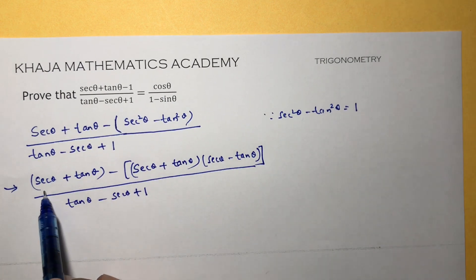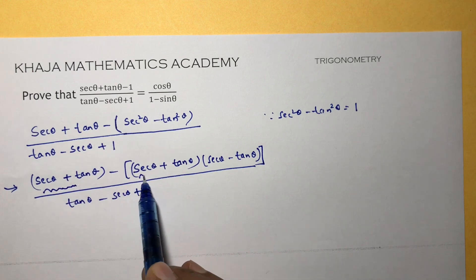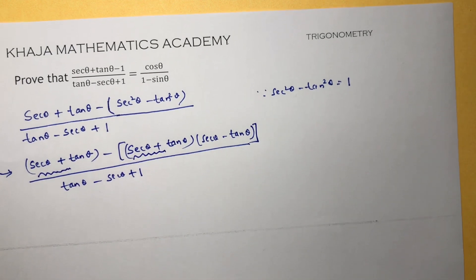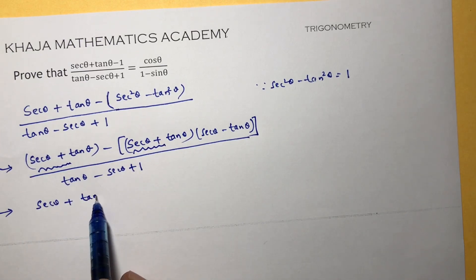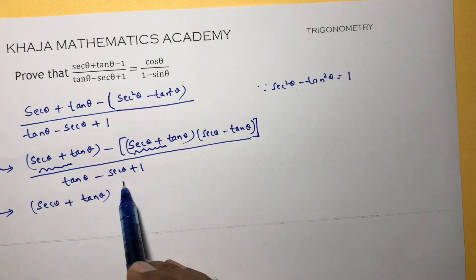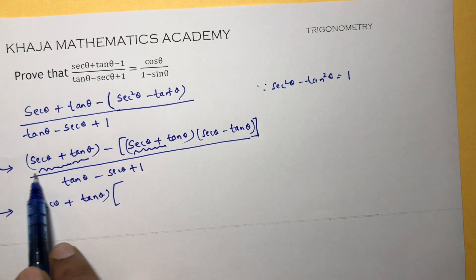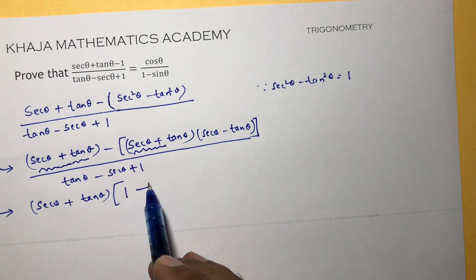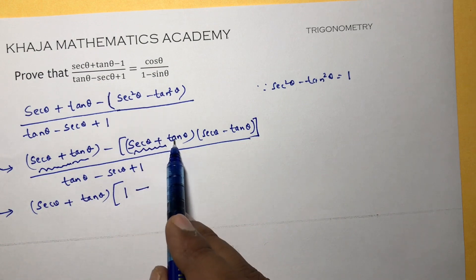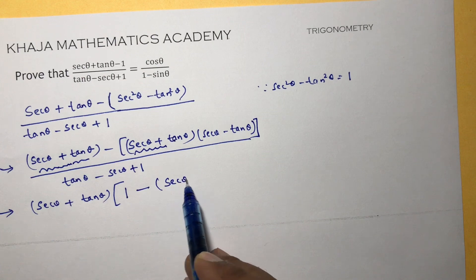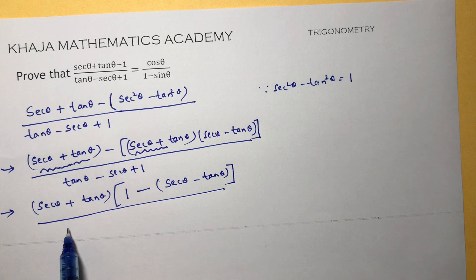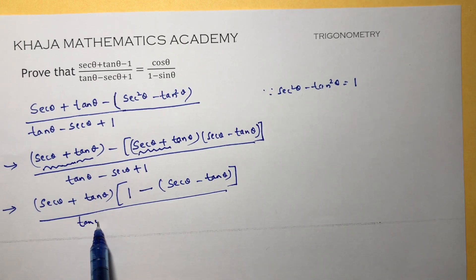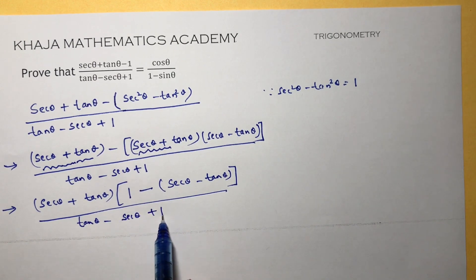In the numerator, take (sec θ + tan θ) common. After taking sec θ + tan θ common, what is left is (1 - (sec θ - tan θ)), giving (sec θ + tan θ)(1 - sec θ + tan θ) divided by (tan θ - sec θ + 1).